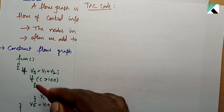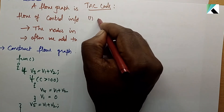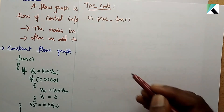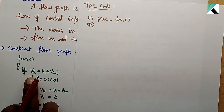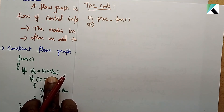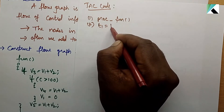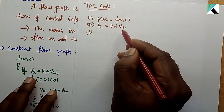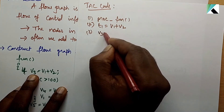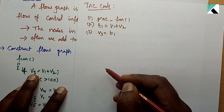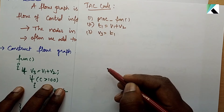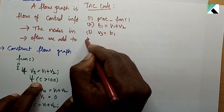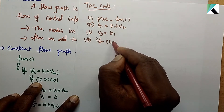First, write the function — the procedure or function. Next, the second line: v3 is equal to v1 plus v2, so we use one temporary variable. T1 is equal to v1 plus v2.